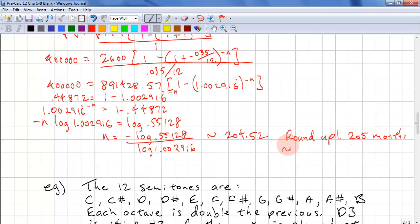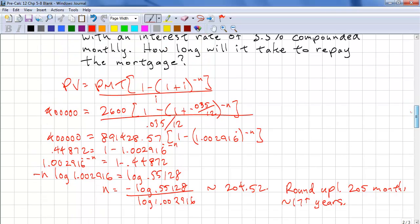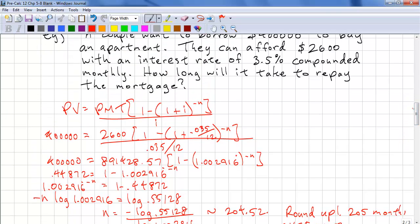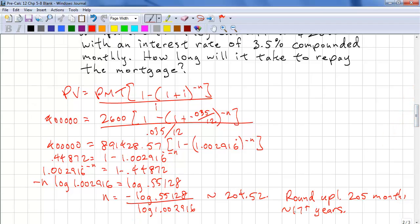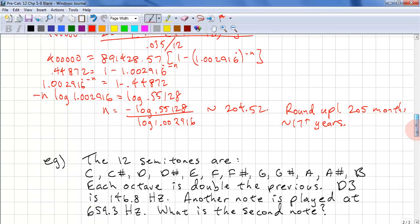That is roughly 17 plus years. So 2600 a month to pay off a $400,000 condo in 17 years, that's not too bad. Most people have an amortization of 25 years. This length of time is called the amortization. This is 17 years.